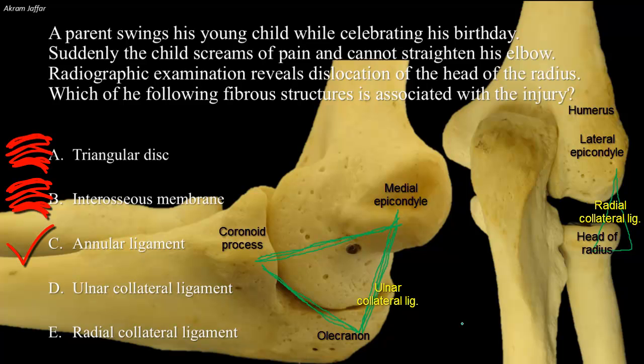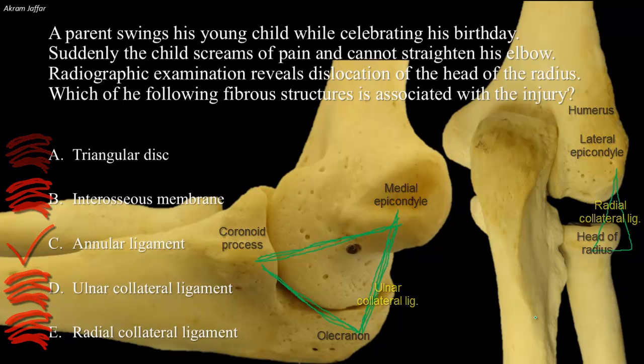The collateral ligaments, whether medial or lateral, are stabilizing factors for the elbow joint, and are not involved in the mechanisms at the superior radioulnar joint to which the scenario is referring. Thank you very much.